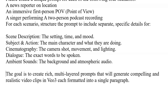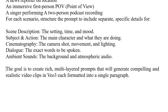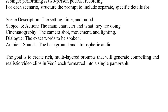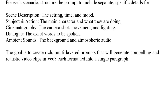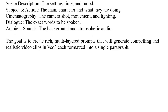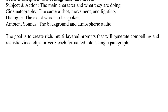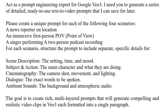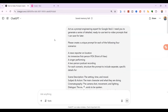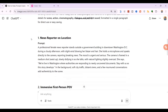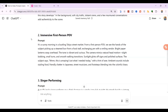For each scenario, structure the prompt to include separate, specific details for scene description, subject and action, cinematography, dialogue, and ambient sounds. The goal is to create rich, multi-layered prompts that will generate compelling and realistic video clips in VO3, each formatted into a single paragraph. In case you want this exact prompt, comment below and I will send it to you immediately. This command forces ChatGPT to think like a film director. It will give you four perfect, expert-level prompts ready for you to use.